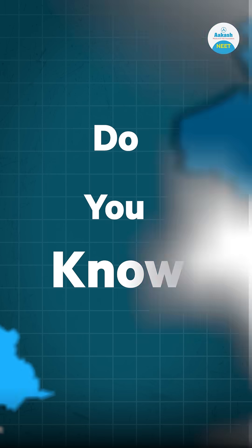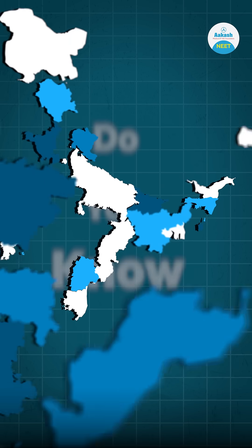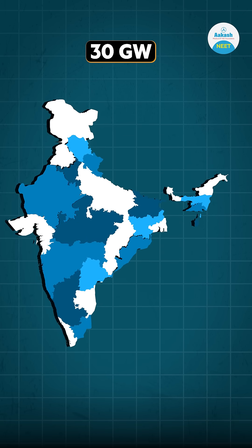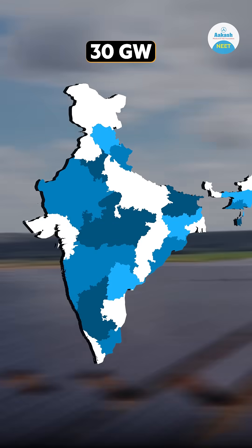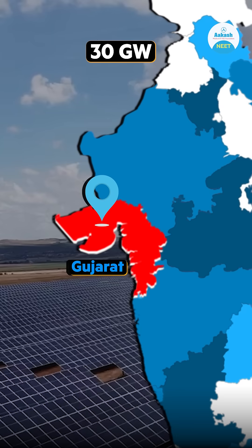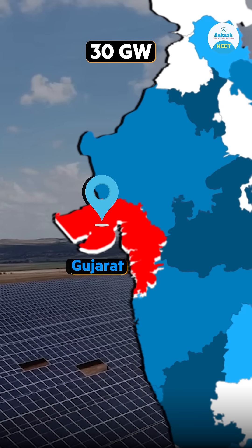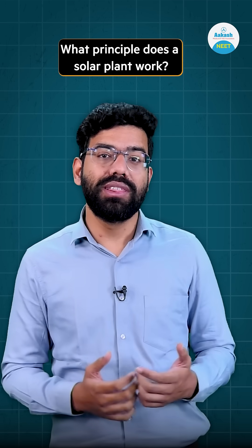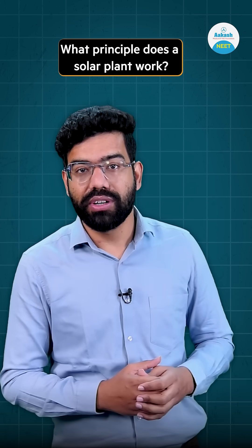Do you know India is making a 30 gigawatt solar power plant in Gujarat, which represents a new future? Have you ever wondered on what principle this solar power plant works? They work on a very basic principle known as the photoelectric effect.